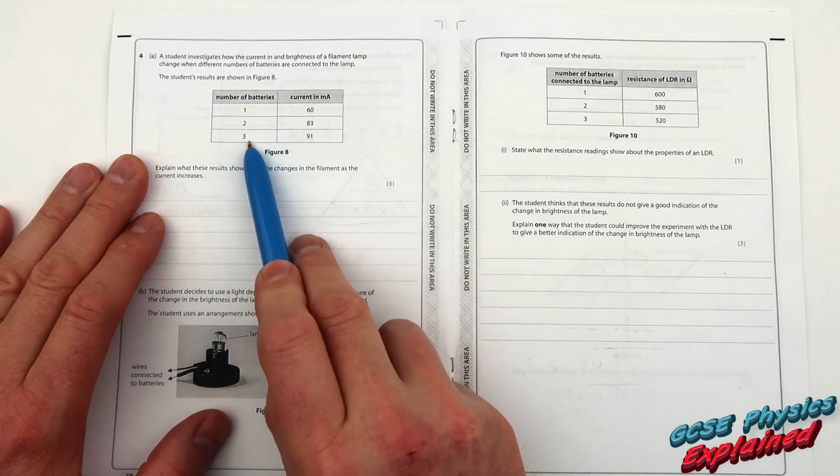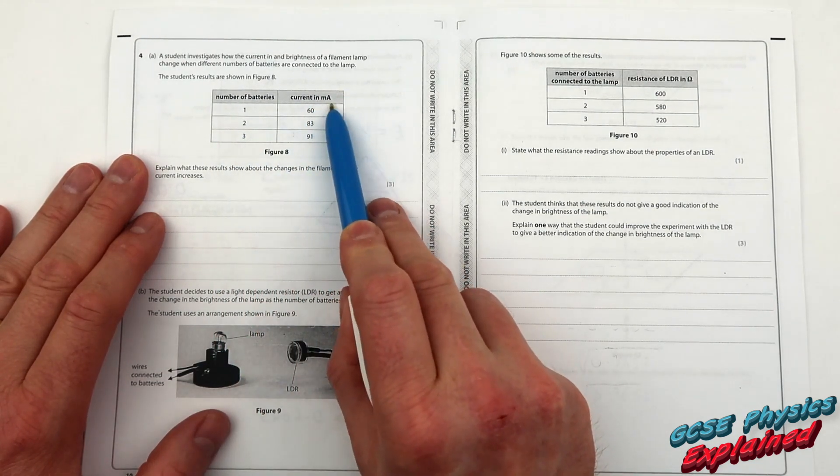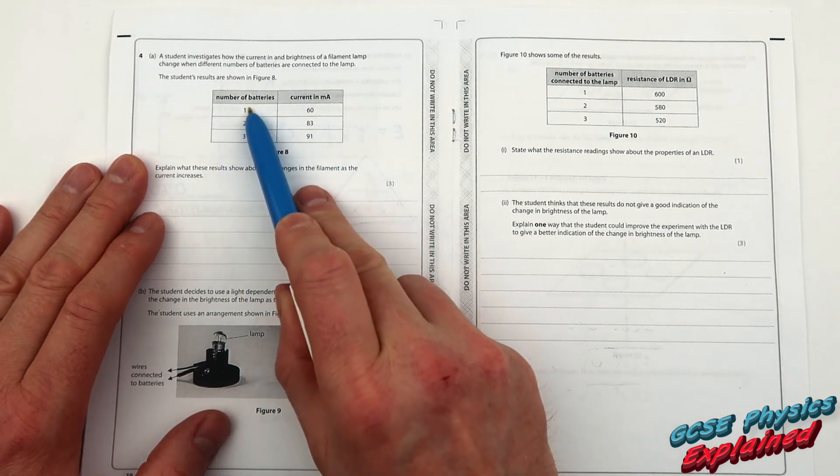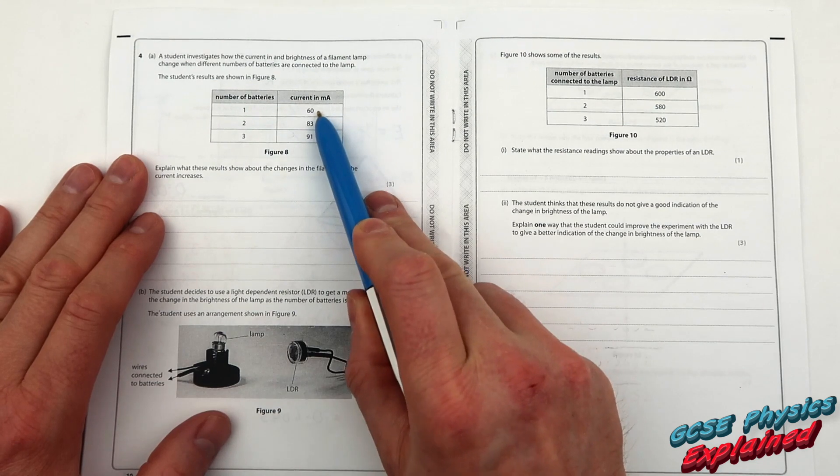Number of batteries: 1, 2, 3. Current in milliamps: 60, 83, 91. The more batteries I've got, the current's getting bigger.